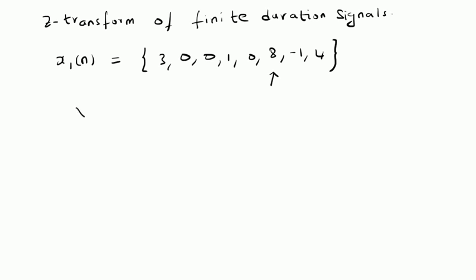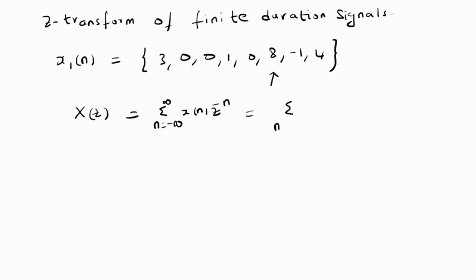The Z transform X of Z is given by the summation from n equal to minus infinity to plus infinity of X of n times Z power minus n. This is the definition. By using this sequence, we can clearly see that 3 will be at n equal to minus 5 and 4 is at n equal to 2. So the summation will be from n equals minus 5 to 2 of X of n times Z power minus n.